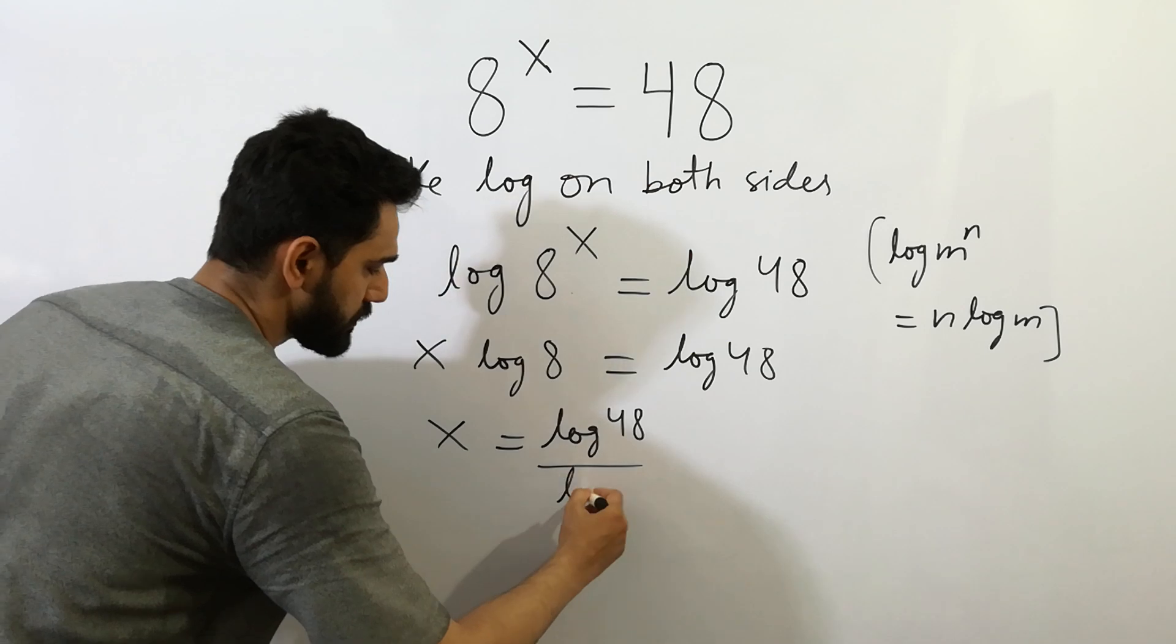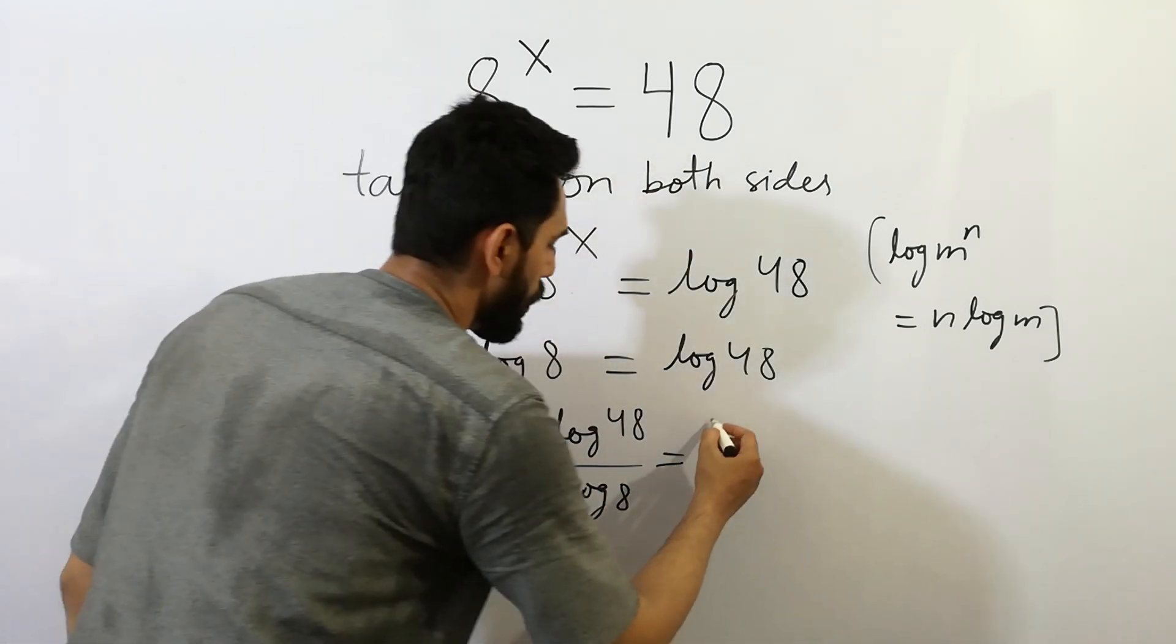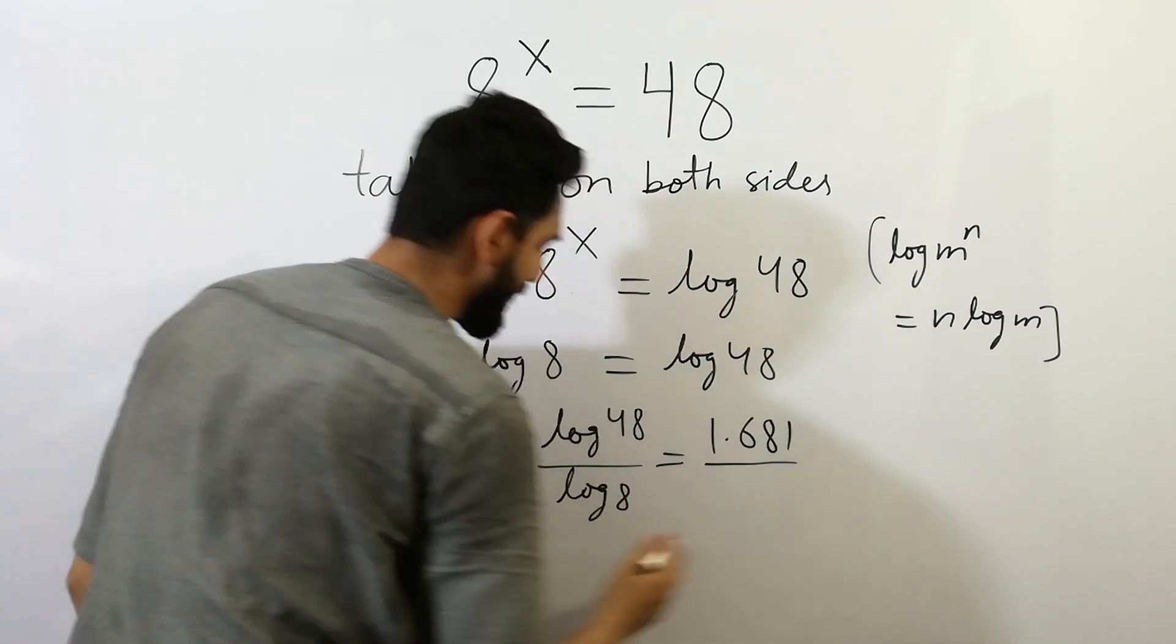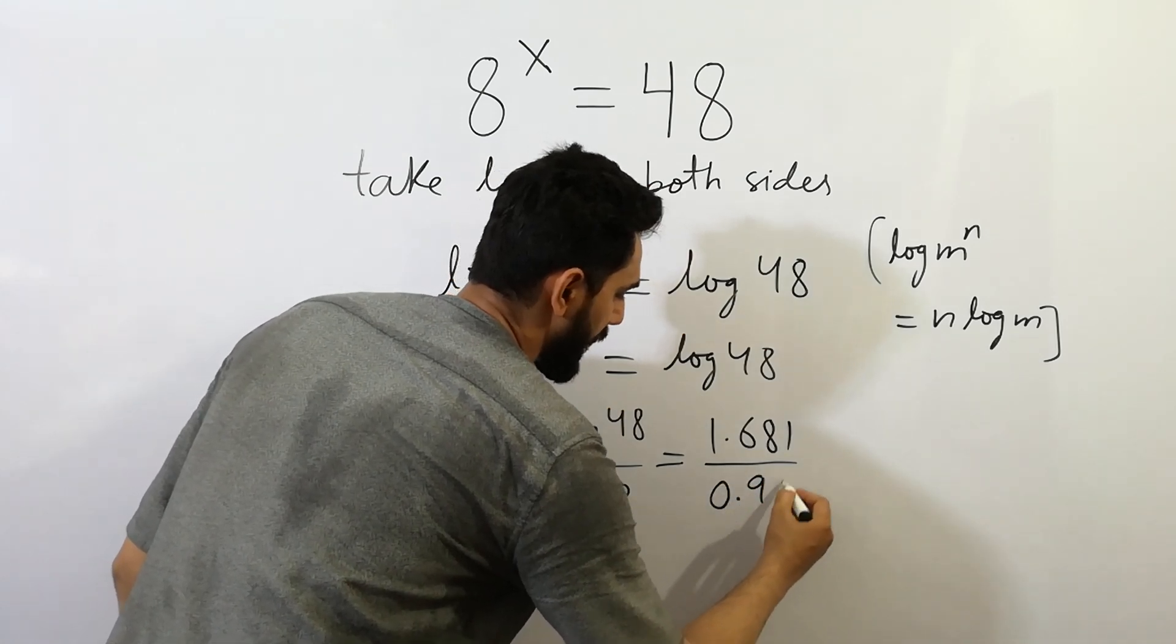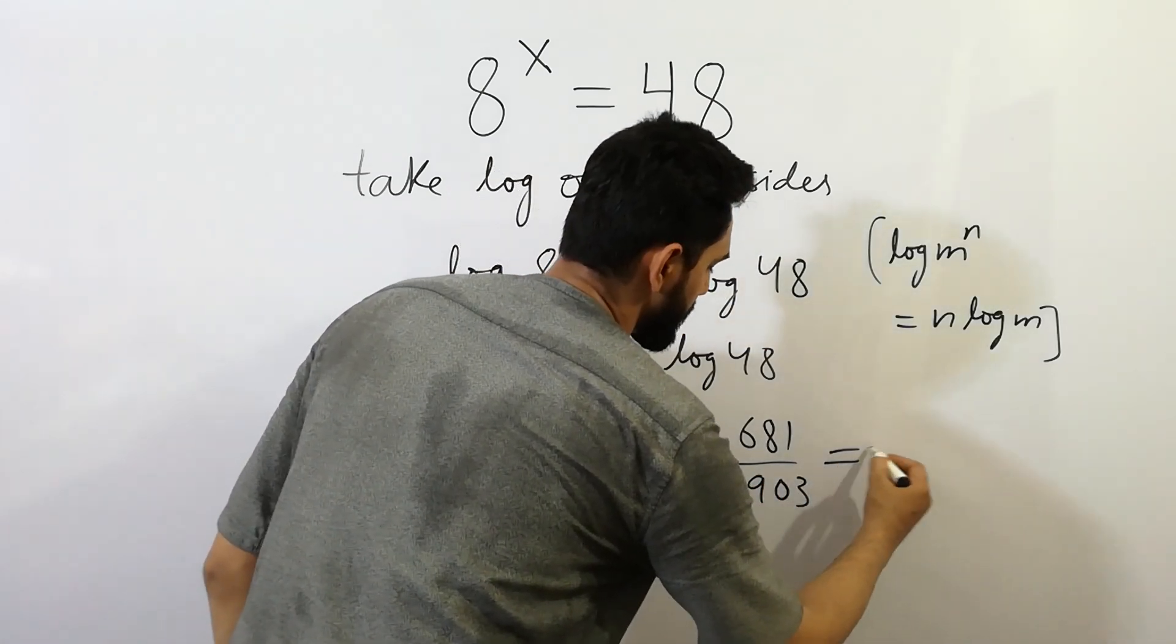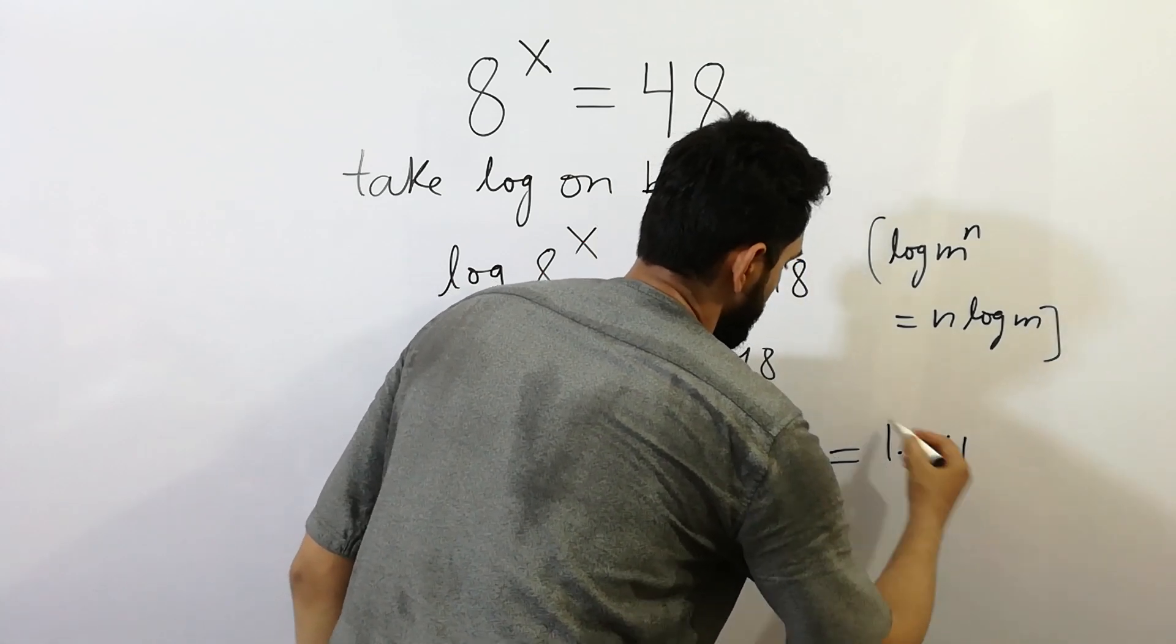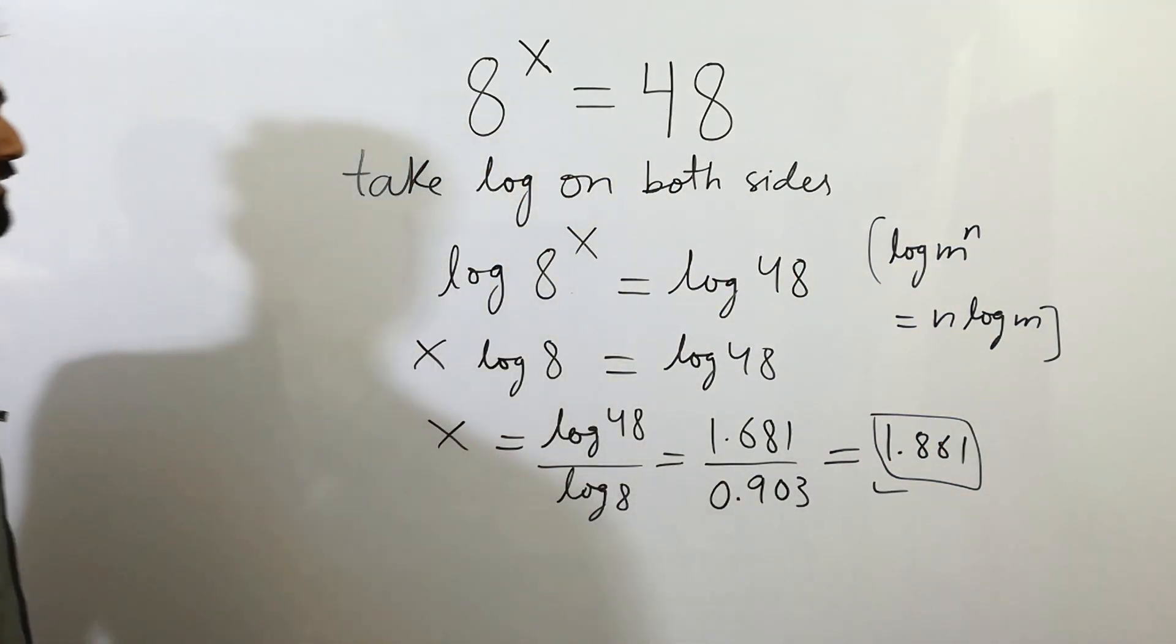Log 48 is equal to 1.681 and log 8 is equal to 0.903. By dividing, we will get 1.861. So that's our right answer.